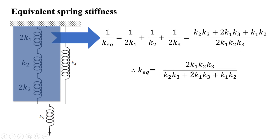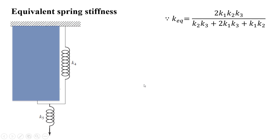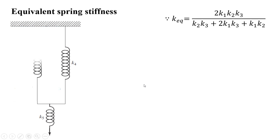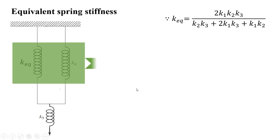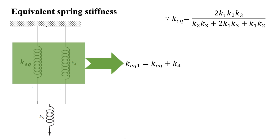Therefore, k_equivalent is the reciprocal of that expression: k_equivalent = 2k1·k2·k3 divided by (k2·k3 + 2k1·k3 + 2k1·k2). This reduces the three springs into one spring with equivalent stiffness k_equivalent.